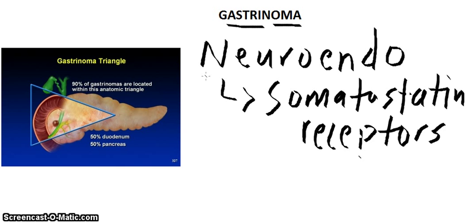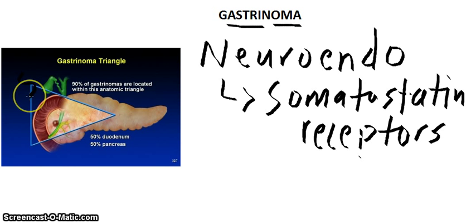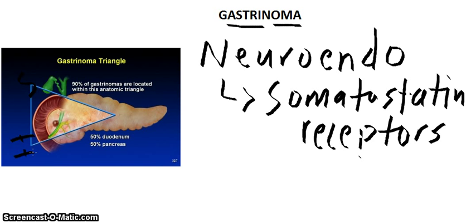So where are these neuroendocrine tumors of gastrinoma found? Well, 90% of them are found around the pancreas or the peripancreatic area. Doctors locate them using the gastrinoma triangle, within which 90% of gastrinomas are found. This triangle has a superior border made from the cystic duct and the common bile duct, an inferior border made by the second and third part of the duodenum, and a medial border made by the head and neck of the pancreas.